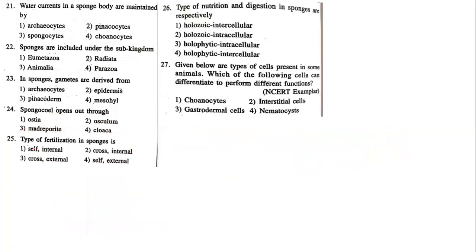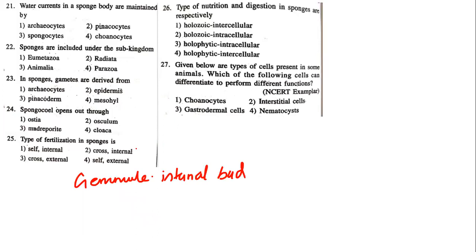What type of fertilization do sponges have? Almost everyone knows it is internal fertilization. Gemmules are produced, which are internal buds. So obviously it is internal. And whether it is self or cross — it is cross fertilization, not self. So the answer is cross and internal fertilization.